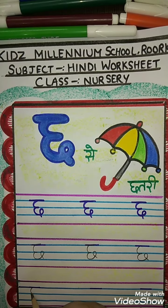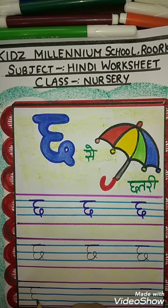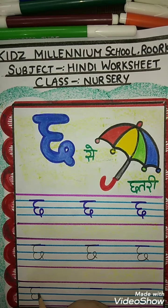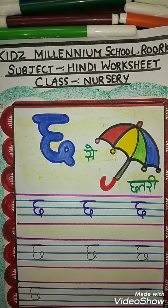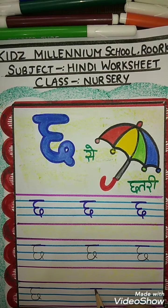Make a curve, joining with another curve. Upar ki taraf ghumayenge, andar, like this. Or usko niche ki taraf lekar ayenge. Chh se Chhatri.